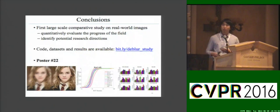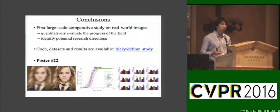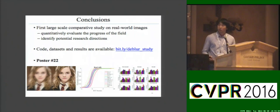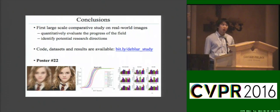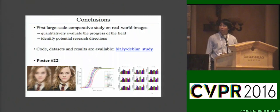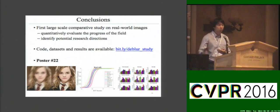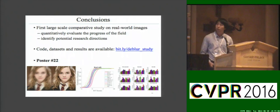In conclusion, we provide the first large-scale comparative analysis of blind motion deblurring algorithms on real-world blurred images. We evaluate the progress of this field and identify potential directions for future research. Our code and dataset are available on our project website. If you are interested in more details, please come to our poster in session 22. Thanks for your attention.